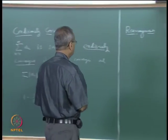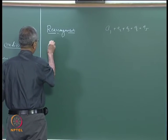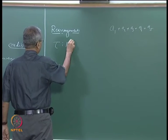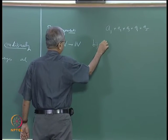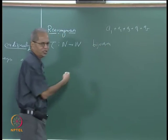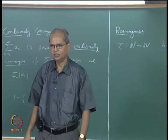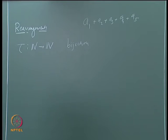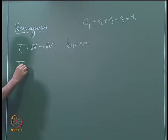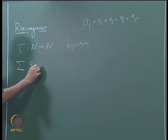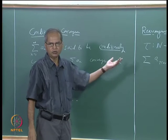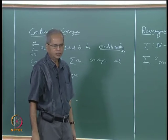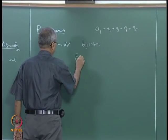To make it more precise: suppose we take a map tau from N to N, and suppose it is a bijection — such maps are also called permutations. If you consider a series sigma a_{tau(n)}, where your given series is sigma a_n, then sigma a_{tau(n)} is called a rearrangement of sigma a_n.